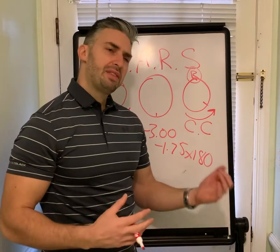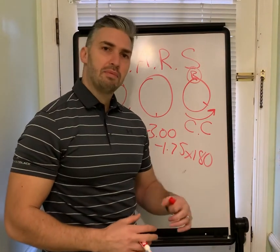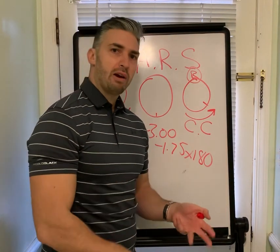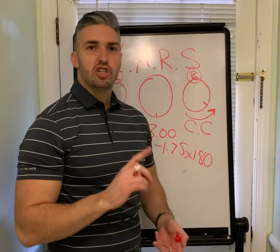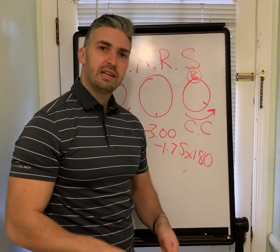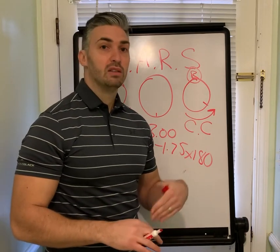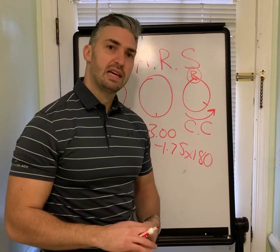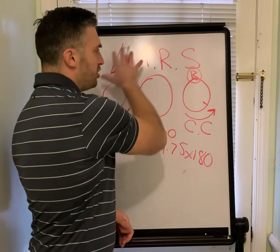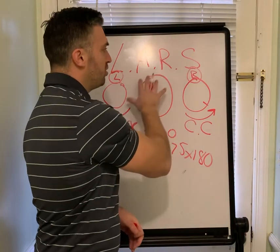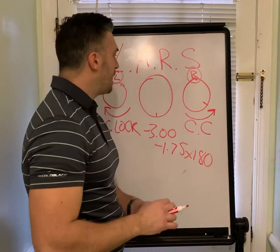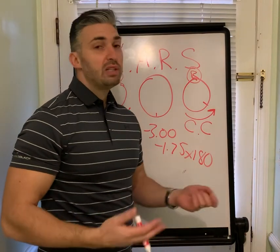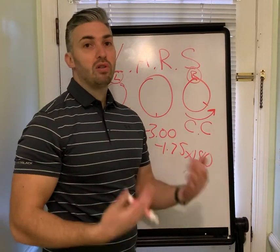There are other methods to help lenses stabilize, like prism ballast, peri-ballast, and truncation — different things that you should know the terms for, look them up, and make sure you study them for the test. But this is a question type you can work through on the exam, and you'll probably have three or four of these. They're really simple if you know the rules.